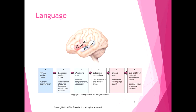Here's the path for language. The primary auditory cortex handles auditory discrimination — it detects a sound and passes it to the secondary auditory cortex. The secondary auditory cortex classifies it: is it music, is it language? If it's classified as language, it's sent to Wernicke's area. Wernicke's area handles vocabulary and auditory comprehension.